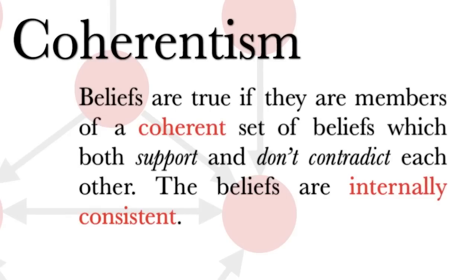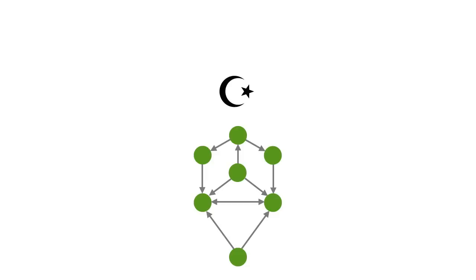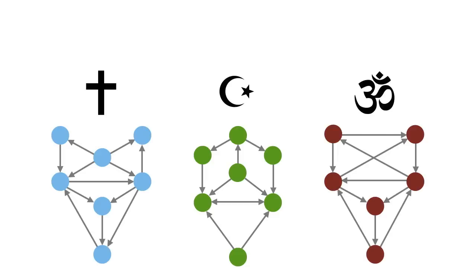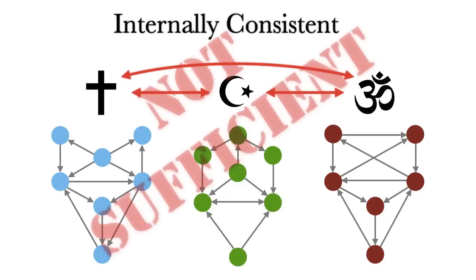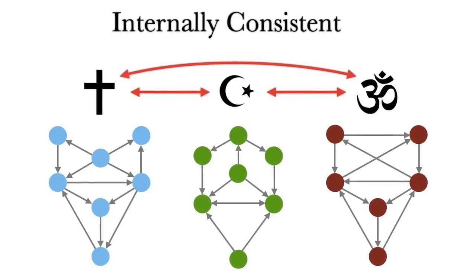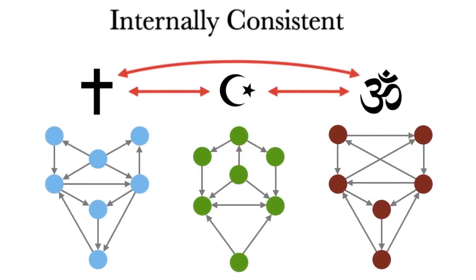Coherentism has problems that can be illuminated right out of the gate. Take three different religions: Islam, Christianity, and Hinduism. All three of these religions can be formulated in a way that they are internally consistent, but clearly they all contradict each other. Therefore they can't all be true. Therefore internal consistency among a set of beliefs is not sufficient for truth. This is called the isolation objection to coherentism—namely, a set of beliefs can be internally consistent in isolation without actually being true.